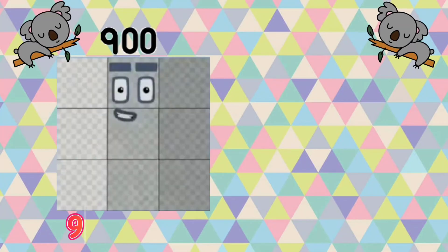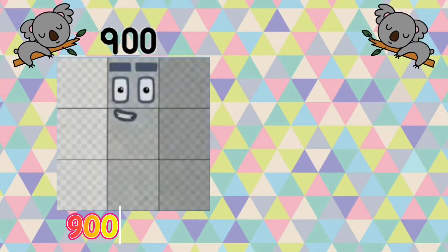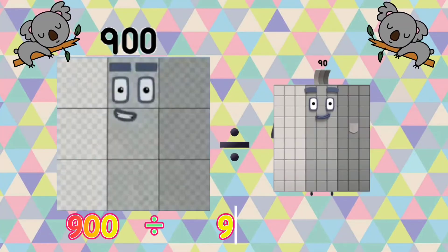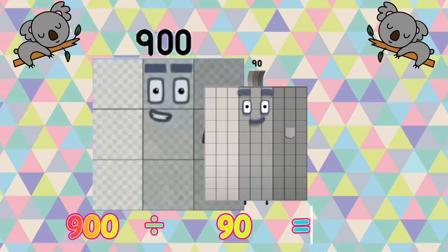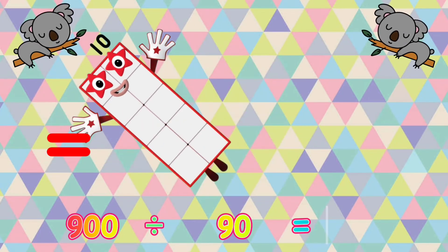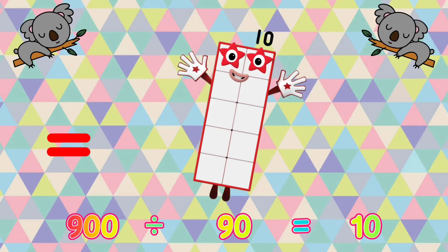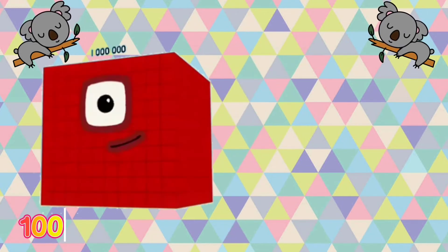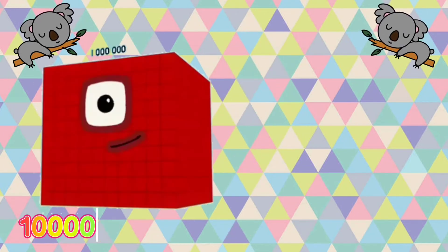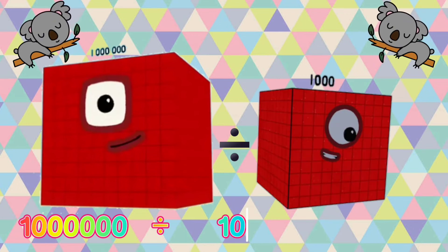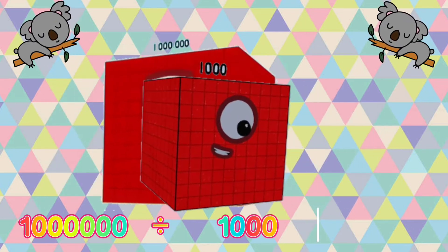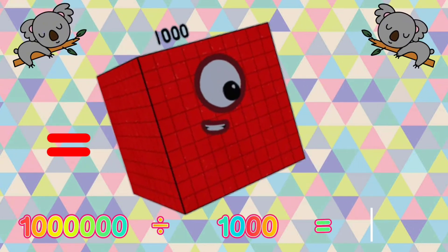900 divided by 90 is equals to 10. 1,000,000 divided by 1,000 is equals to 1000.